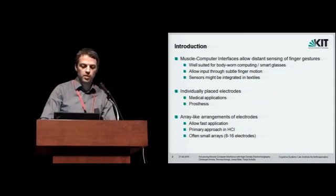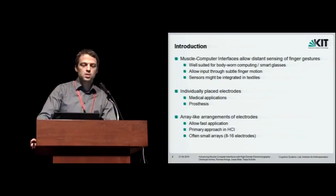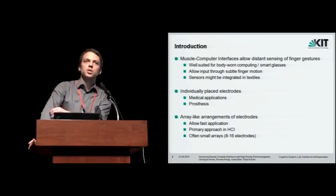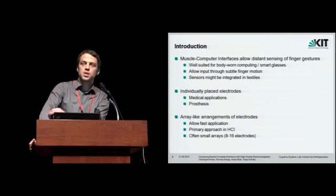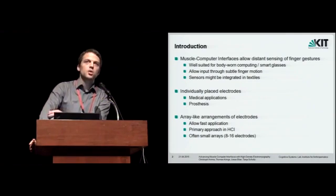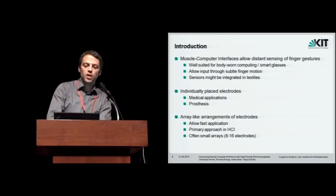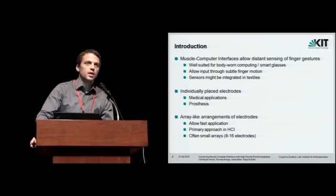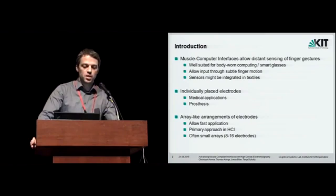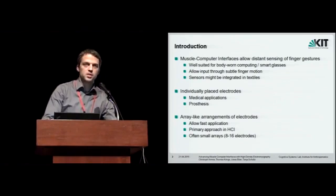In future, maybe those sensors might also be integrated in textiles, which would make them even more practical. Generally there are two main approaches how to place the sensors. One is to really find the best spot above the muscle and put the electrode right there. This is usually done in medical applications or prosthesis research. The other approach is to use an array-like arrangement of electrodes arranged in a regular grid and then placed around the forearm.